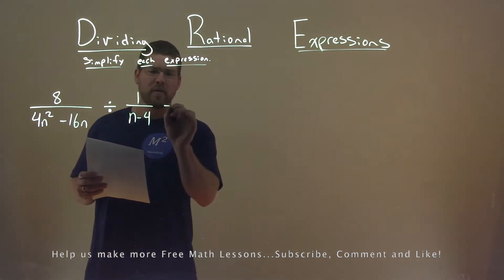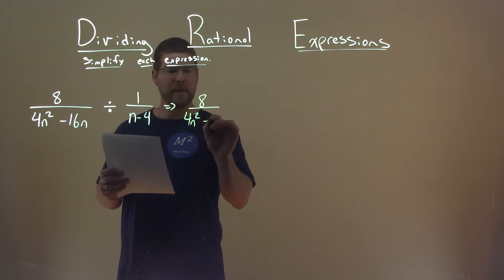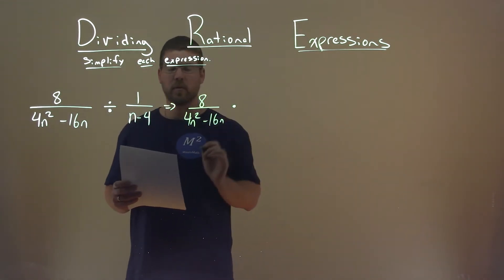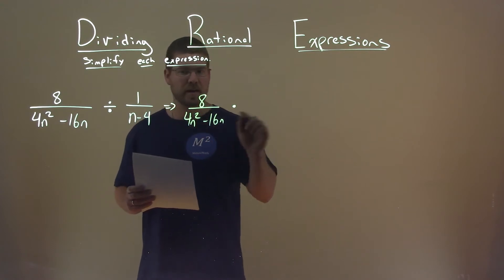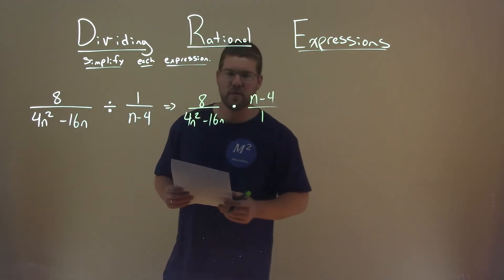Well, I'm going to rewrite this as a multiplication problem. 8 over 4n squared minus 16n stays the same, but instead of dividing, we're going to multiply, and we're going to flip the second fraction. n minus 4 goes to the numerator, and 1 is just in the denominator.